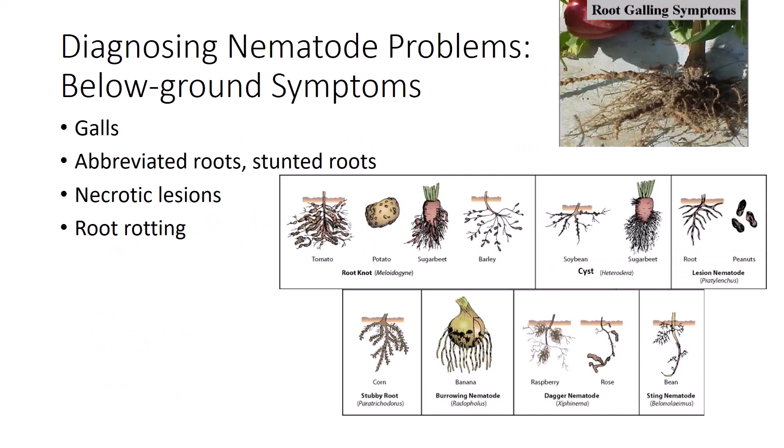Below-ground symptoms may be more useful than top symptoms for diagnosing nematode problems. Galls caused on roots by root-knot nematodes, abbreviated roots or stunted root growth, necrotic lesions in the root cortex, and root rotting may all be symptoms of nematode problems. An experienced observer can see cysts on the roots of their host without magnification. The young adult females are visible as tiny white beads about the size of a period on a page. After a female cyst nematode dies, her white body wall is tanned to a tough brown capsule containing several hundred eggs.